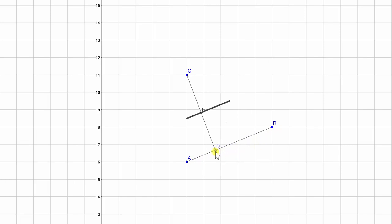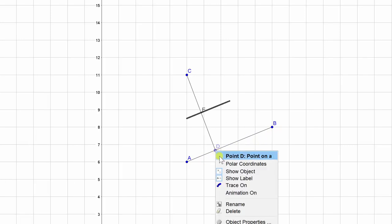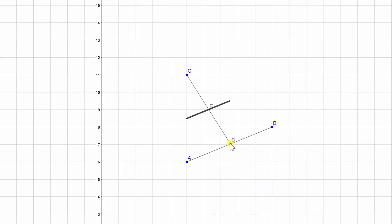To automate that, you right-click point D and turn on animation, which restricts the motion of point D to go back and forth between the endpoints of line segment AB. That's really all you need to do to animate it.